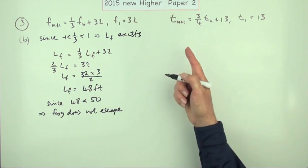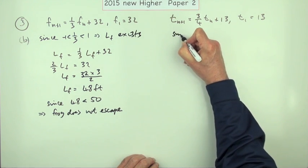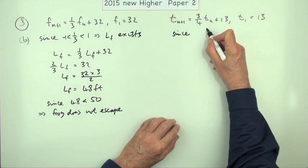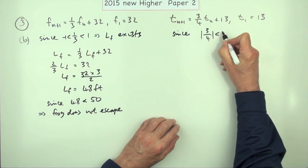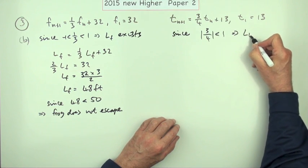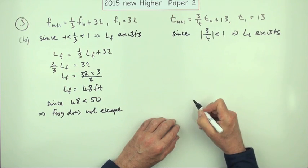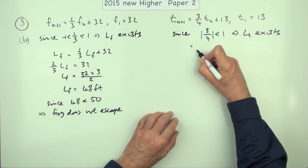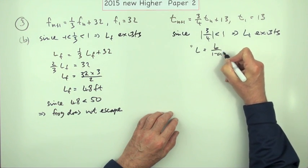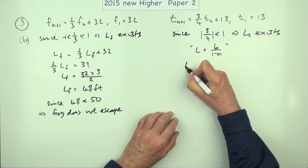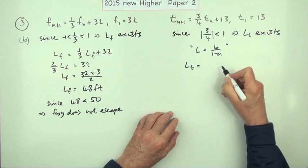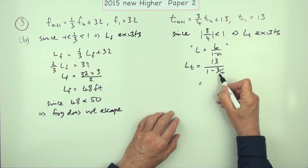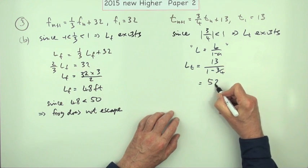Now consider the toad. Same again. There's a limit here. Since its absolute value is less than 1, that means that the limit for the toad exists. This time I'll find the limit the alternative way which is to use the formula. The limit for the toad is going to be 13 over 1 minus 3/4. So that will be 1/4. So that's 4 times the 13 is 52 feet.